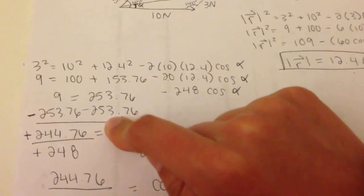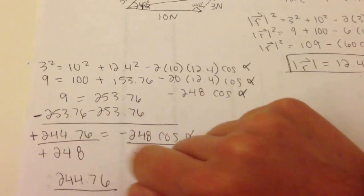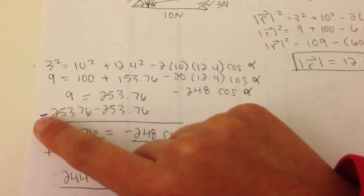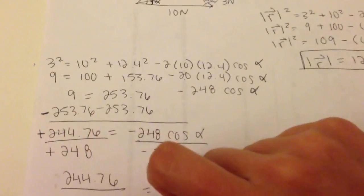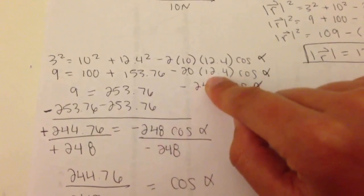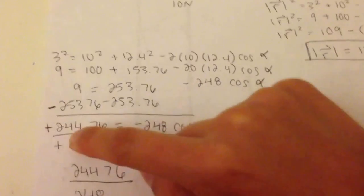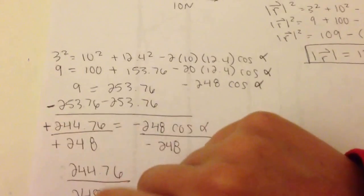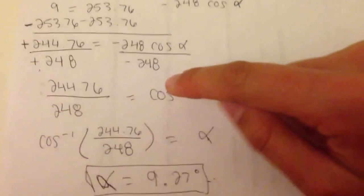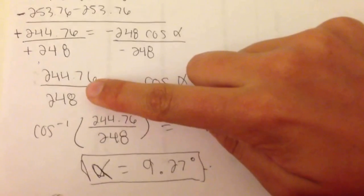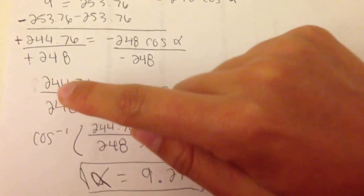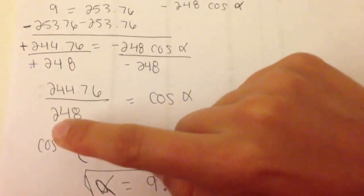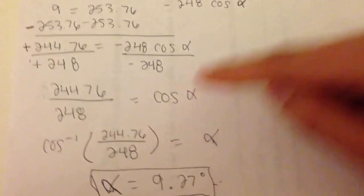So then we bring it down, subtract to both sides. This actually becomes negative because of the negative right there. So that was a negative. Because this is also negative, negative divided by negative makes those become positive. So then we can move down. We have my 244.76 divided by 248 equals cosine of alpha.